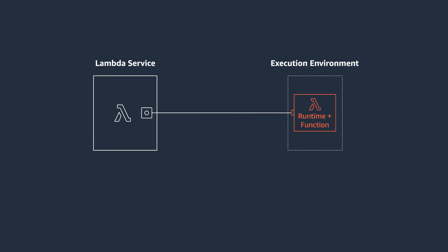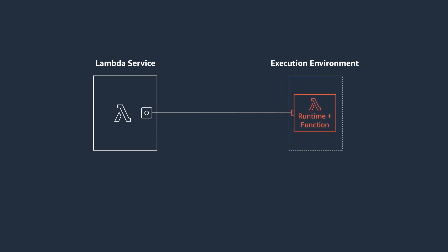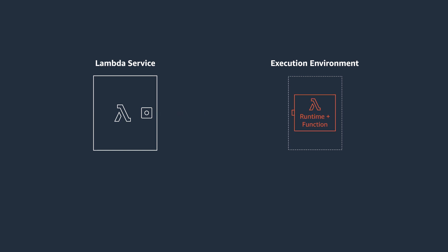When you invoke a Lambda function, the Lambda service routes the request to this environment. After your code has processed the request, the Lambda service freezes this environment. It thaws it later if it needs to reuse it for another invocation. When the function has not been used for some time, the Lambda service spins down this environment. In this way, the Lambda service automatically manages the lifecycle of compute resources.